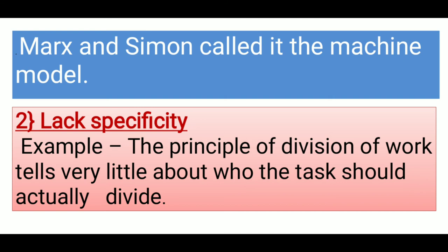Second important criticism: lack of specificity. The principle of division of work tells very little about who the task should actually divide. यहाँ functional specialization देखते हैं, लेकिन बहुत कम ही कहा गया है कि कौन task को कैसे divide करेगा, और कैसे काम को divide किया जाएगा। इसके बारे में fully description नहीं हुआ है — बस कहा गया है कि task को department को लेकर divide करना है, लेकिन specifically और elaborately systematically describe नहीं किया गया है। That's why this theory lacks specificity.